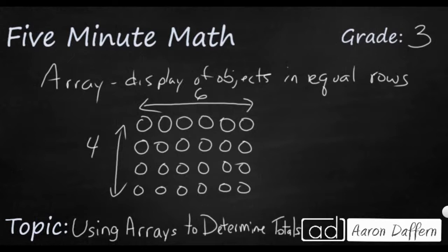So if I wanted to skip count by sixes, I could say six, six more is 12, six more is 18, and six more is 24. So I skip counted by sixes, and it looks like there are 24 circles in this array.